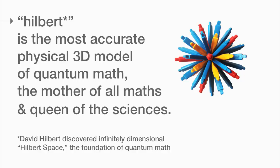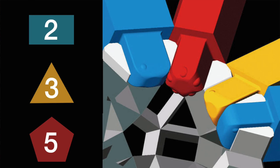The Zone Tool is a physical embodiment of quantum math, the mother of all maths and queen of the sciences. Quantum math is math you can feel. When your child picks up a yellow strut, they can feel the shape of the number 3 — a triangle. In order to build a square, children intuitively use blue struts that are shaped like a number 2, a rectangle.